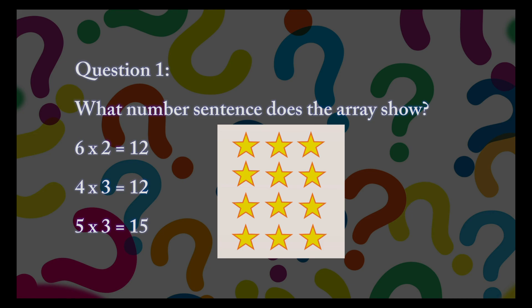Now that you're getting to be a multiplication pro, try these 4 questions. Good luck! Question 1: What number sentence does the array show? Is it 6 times 2 equals 12, 4 times 3 equals 12, or 5 times 3 equals 15? If you said 4 times 3 equals 12 — awesome sauce! You're correct!